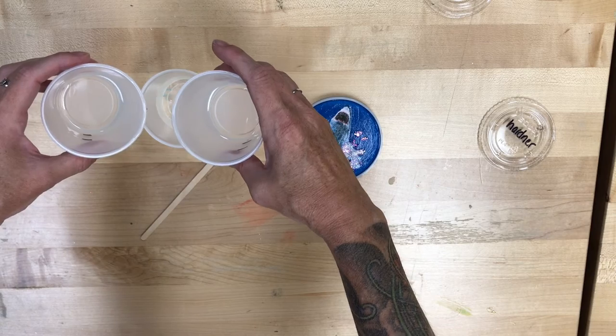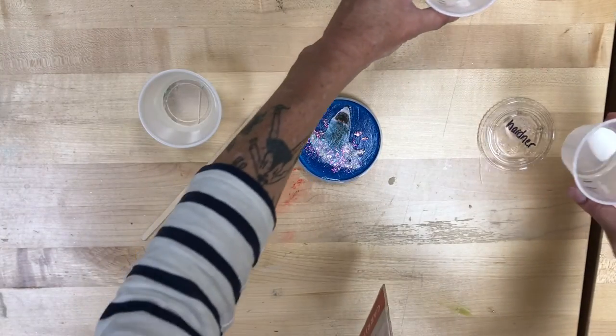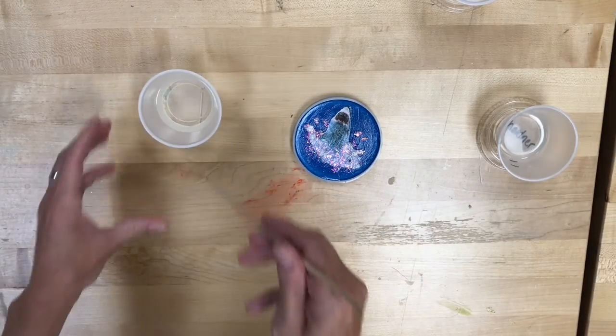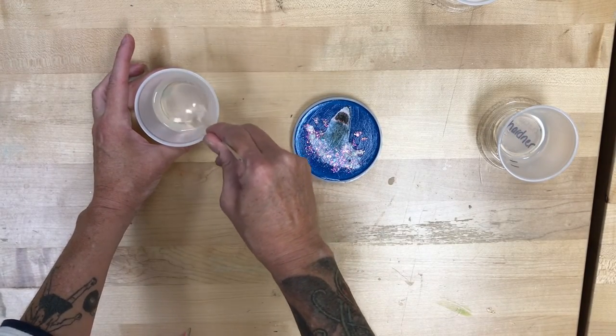And slowly, for a minute or two, stir those together, just like we did when we started out. Except this one, you're not going to add any blue pigment to. You're going to keep this one clear.